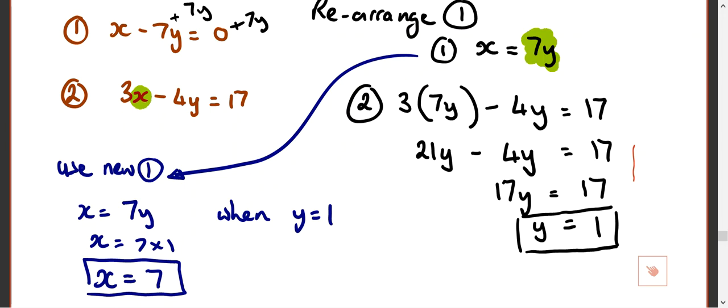Should we check? How do we check? Put it in two. I did use number one. I know that x is 7, y is 1 works because I used it. But does it work in number two? So we can check with number two. So 3 times 7 minus 4 times 1. Does it equal 17? 21 minus 4 does equal 17.